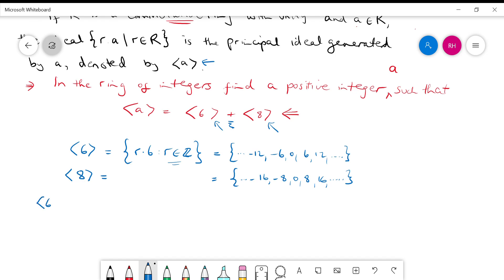it's really the set j such that j equals a plus b, where a is an element of the ideal generated by 6 and b is an element of the ideal generated by a.